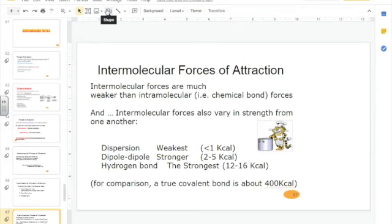Now, for comparison, a true covalent bond—which is the strongest bond—is about 400 kilocalories. So there is a huge difference between intermolecular forces and covalent bonds.